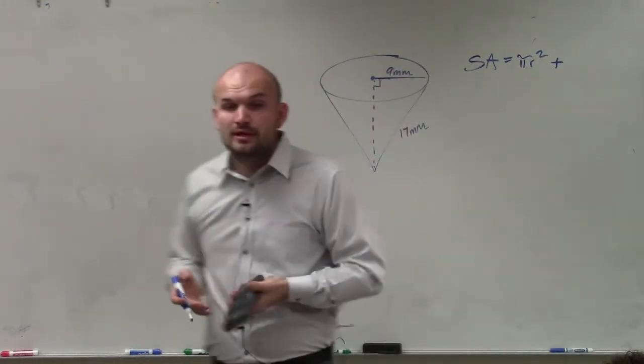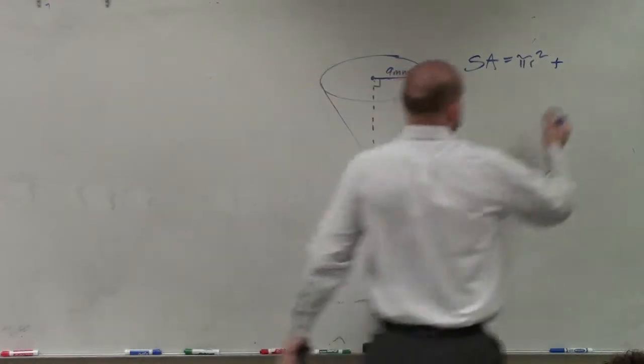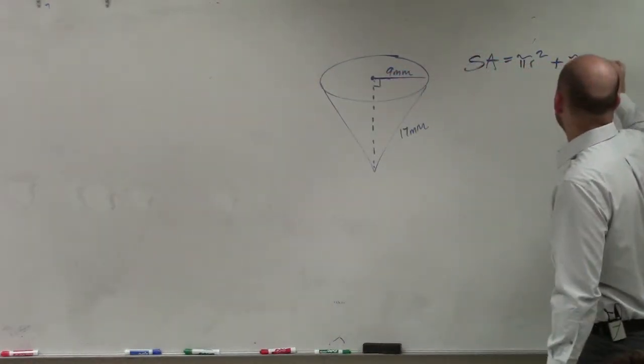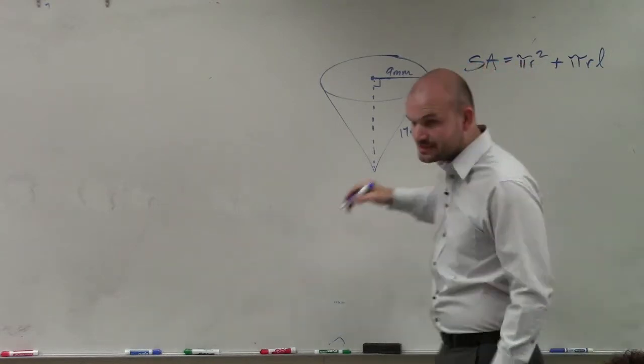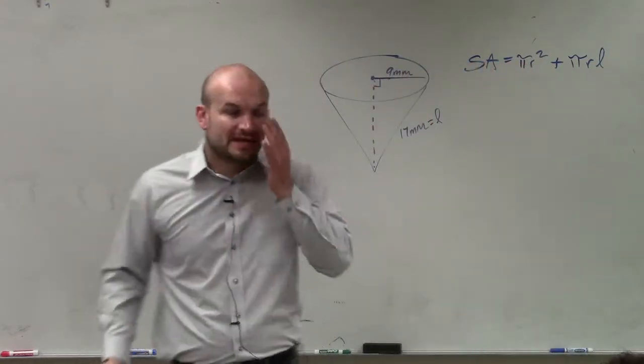Now when we talked about a cone, the lateral area was pi r l, where l was our slant height, and r is obviously our radius.